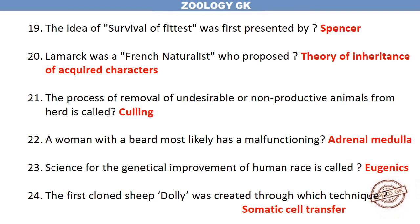The process of removal of undesirable or non-productive animals from a herd is called Culling. A woman with a beard most likely has a malfunctioning Adrenal medulla. The science for the genetical improvement of the human race is called Eugenics.